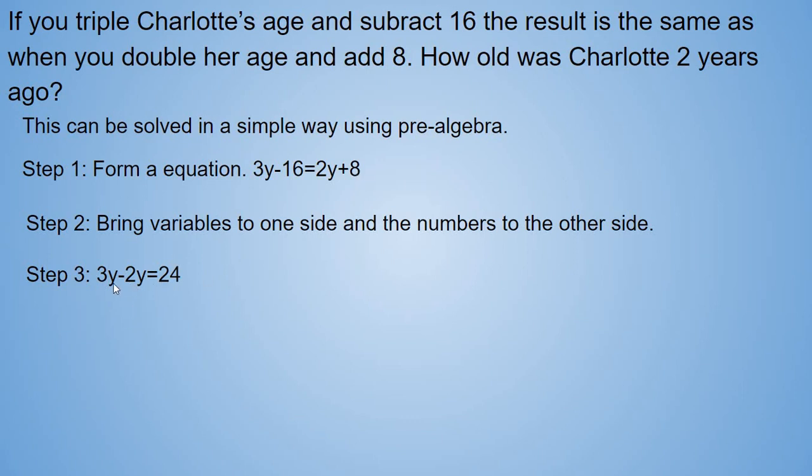So that simplifies down to 3y minus 2y equals 8 plus 16, or 24. So the simplified equation is 3y minus 2y equals 24. And now when we subtract 3y minus 2y, that's 1y or y. Y equals 24.